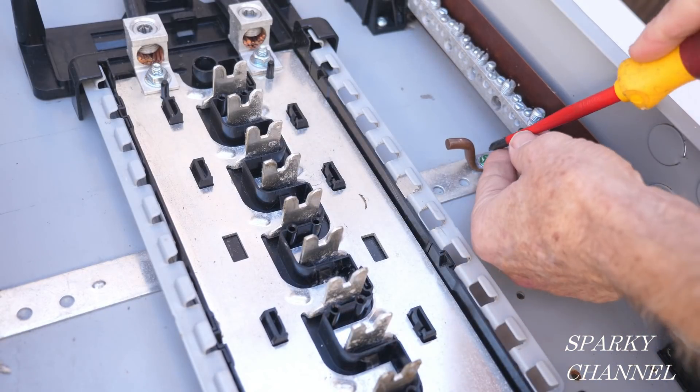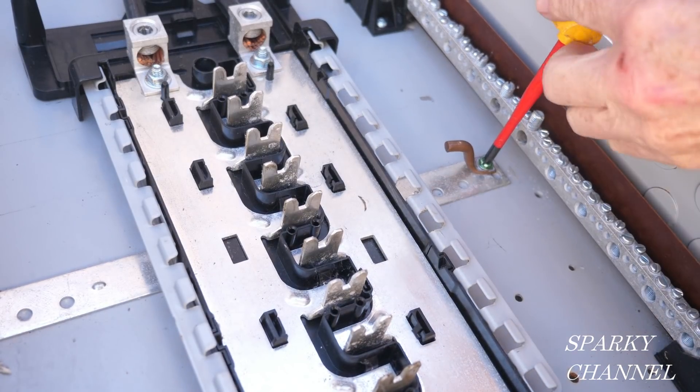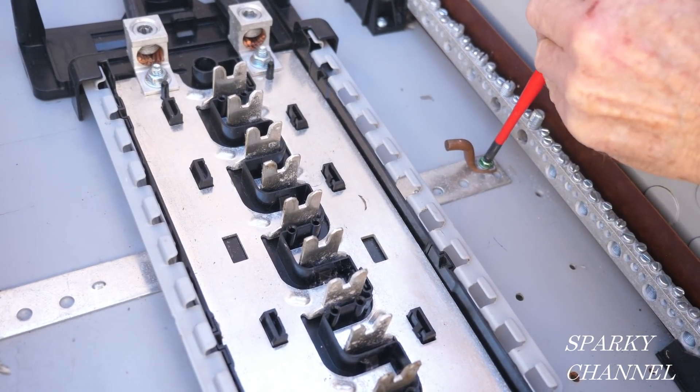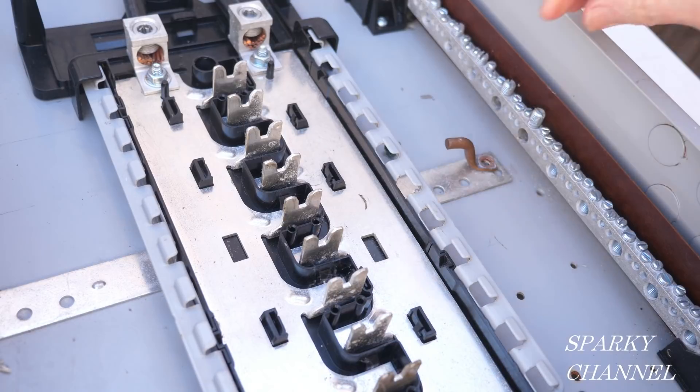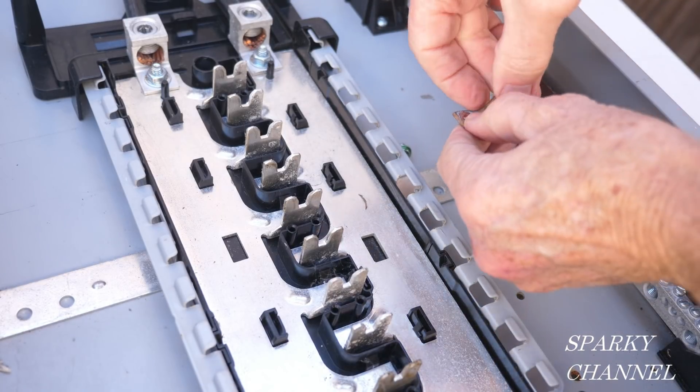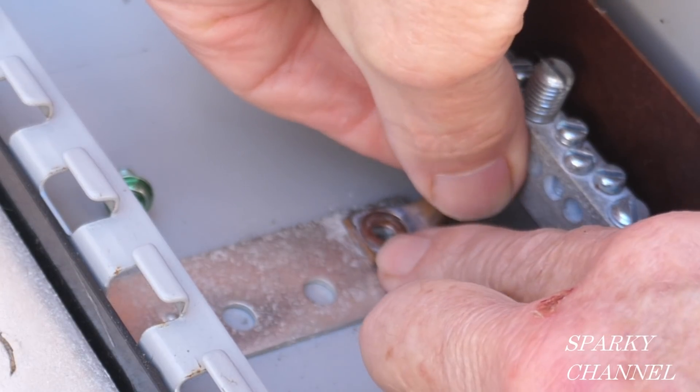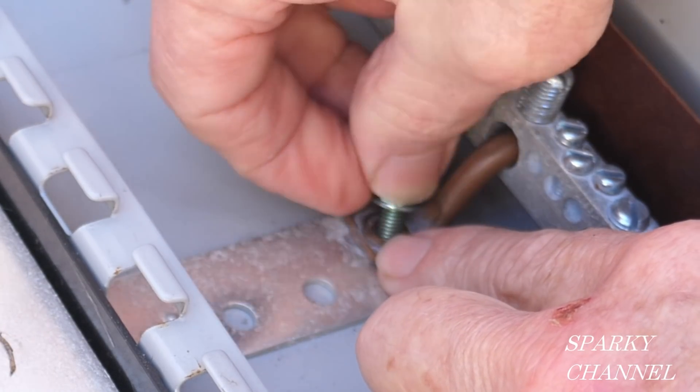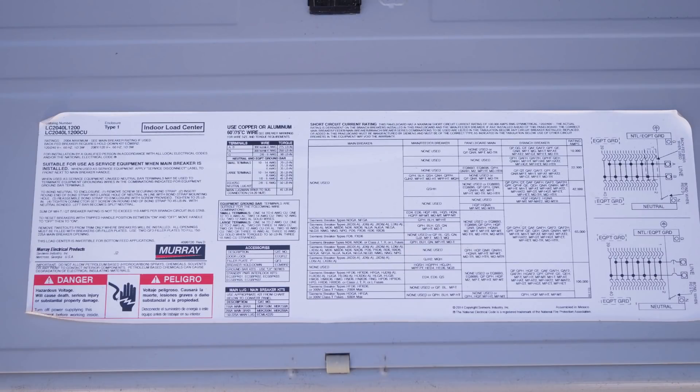As a clue, I'll loosen up this green bonding screw in the Murray load center and turn it toward the neutral bar. Notice that it fits into one of the large terminals on the neutral bar.